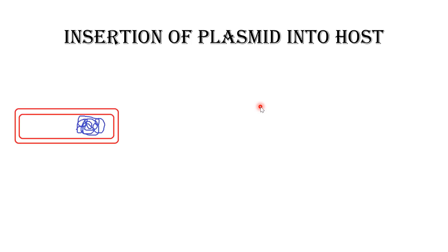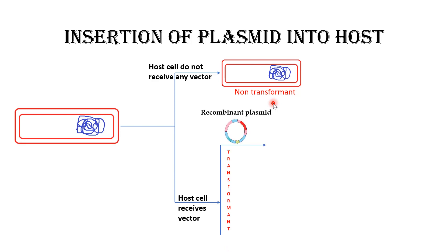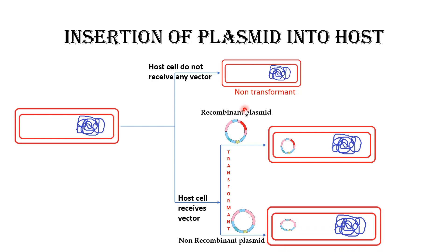Now let us talk about insertion of the plasmid into the host. The host cell is mixed with the plasmids and there can be two fates. First, the host cell may not receive any vector and will be called a non-transformant host cell. Alternatively, the host cell might receive a vector and will be called a transformant host cell. The transformant host cell may either receive the recombinant plasmid, forming a recombinant transformant cell, or receive a non-recombinant plasmid, forming a non-recombinant transformant host cell.